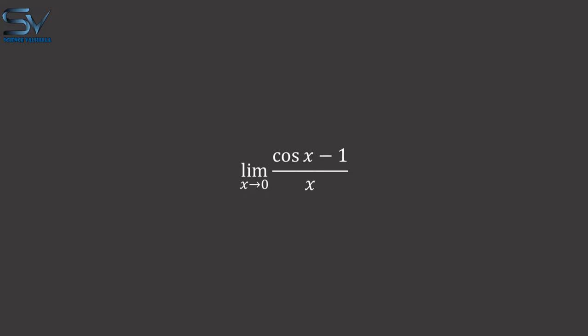However, we have cosine of x minus 1. So we can factor out the common factor of minus 1. It now becomes 1 minus cosine of x.